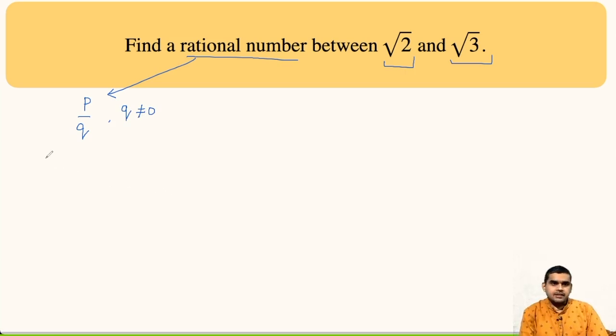Now, I ask you a question: is 2 a rational number? Yes, it is a rational number. But you might be wondering that 2 is not of the form p upon q.